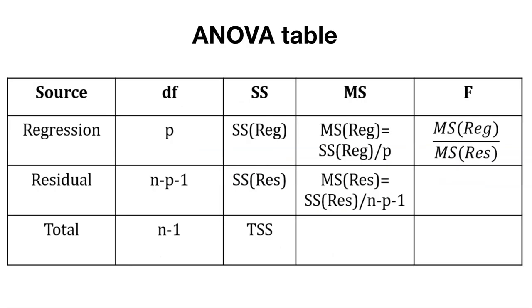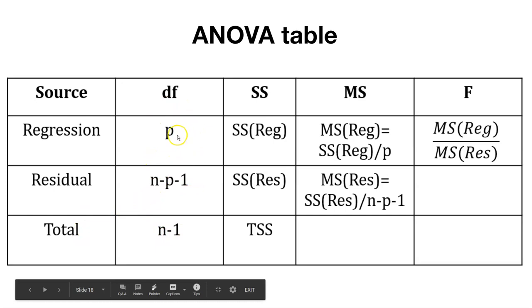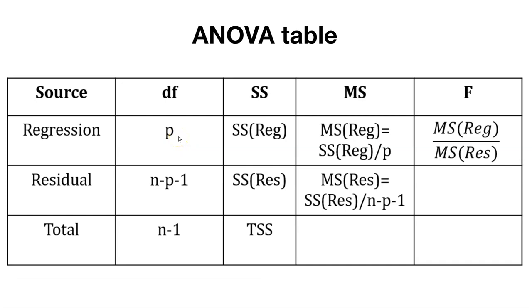This is the ANOVA table that helps keep everything organized. We have three sources: regression, residual, and total. We have a certain number of degrees of freedom. Here p is the number of treatments minus one, so p could be i minus one. The residual degrees of freedom would be n minus p minus one, and the total degrees of freedom would be n minus one.